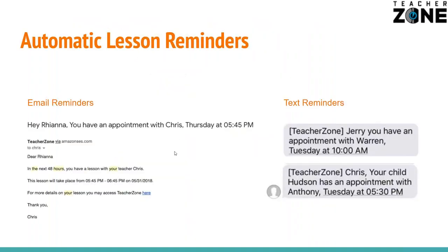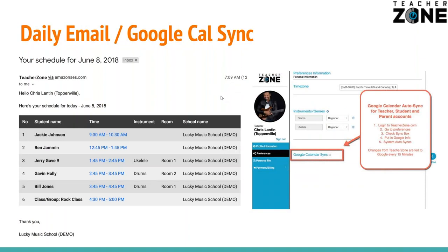We send out automatic lesson reminders to all your customers 48 hours in advance to keep them accountable. It'll have the teacher's name, the school name, everything — it goes out via email and text. We also email your teachers every day at 6 a.m. with what their schedule is, to keep your teachers accountable and to give them a heads up on what their roster looks like for the day. You can also sync TeacherZone to a personal Google Calendar as well, if your teachers don't want to run around with two different calendars.